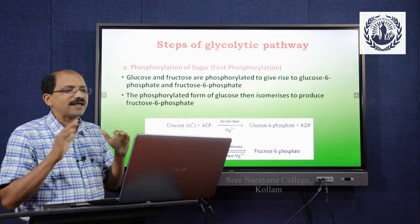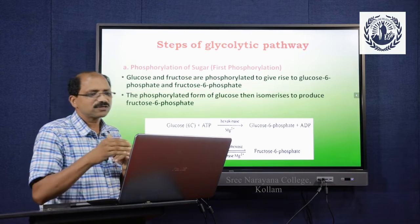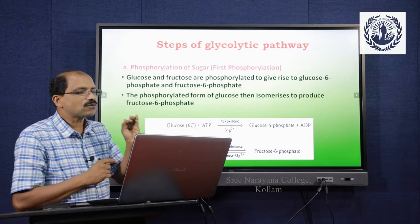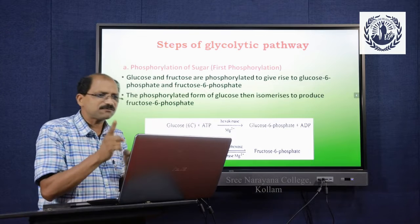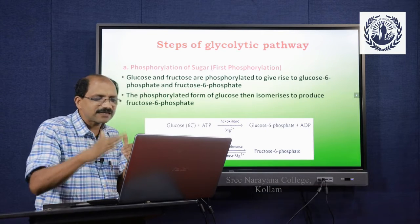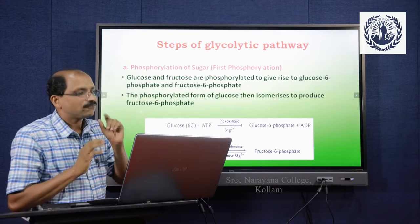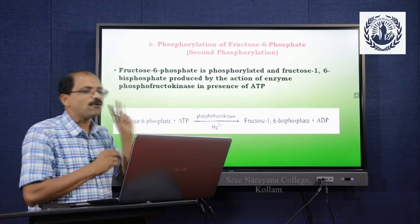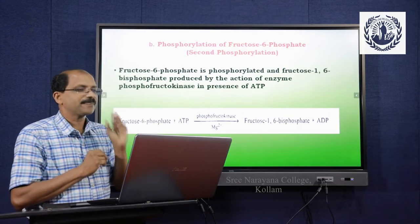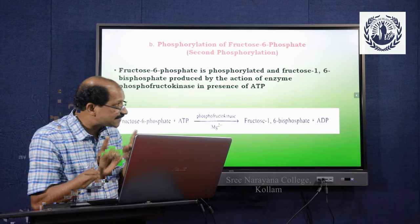Sucrose is converted into glucose and fructose by the enzyme invertase, and these two monosaccharides enter into glycolysis. The steps of the glycolytic pathway begin with phosphorylation of sugars. Glucose and fructose are phosphorylated to give rise to glucose-6-phosphate and fructose-6-phosphate. This phosphorylated glucose is then isomerized to produce fructose-6-phosphate. In the second phosphorylation, fructose-6-phosphate is phosphorylated to fructose-1,6-bisphosphate.